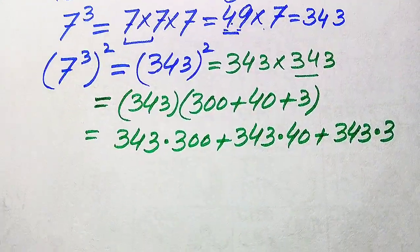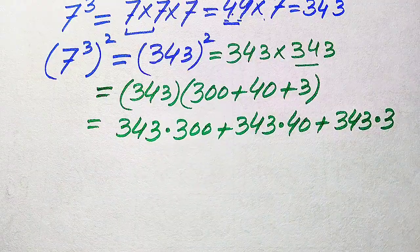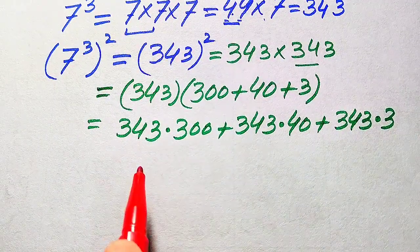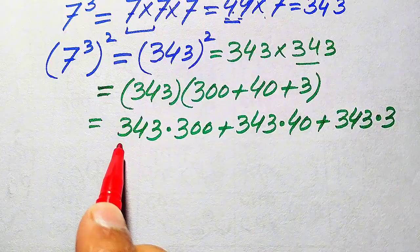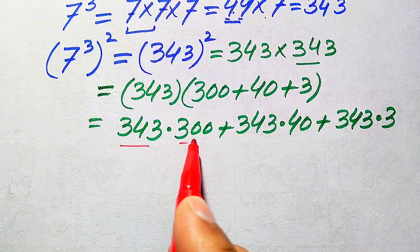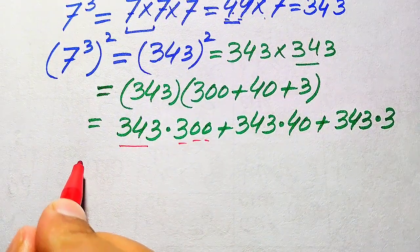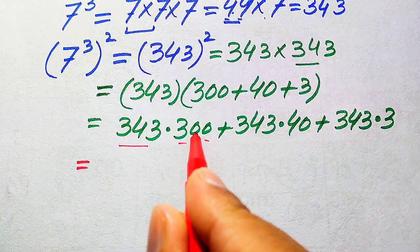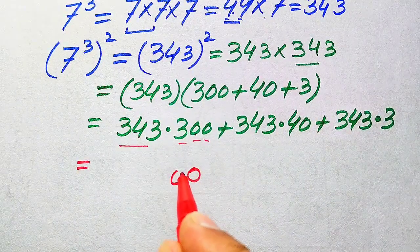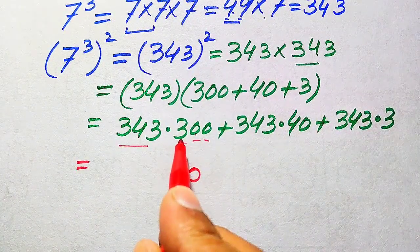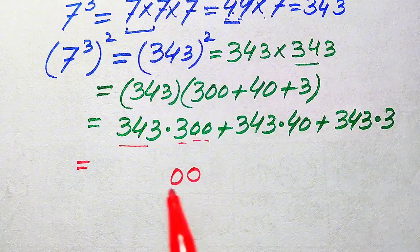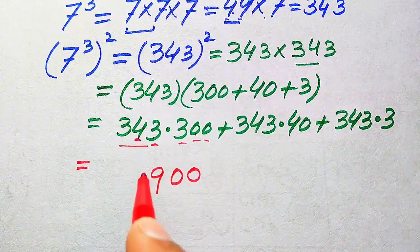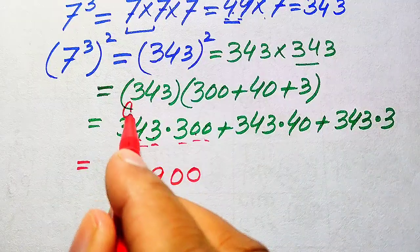We multiply each of these values separately. First, multiplying by 300: we consider the one-digit and three-digit numbers. Multiplying 0 with the complete number gives 0; multiplying the next 0 again gives 0; then multiplying 3 with the number: 3 threes are 9, 3 fours are 12 — write 2 and carry 1.